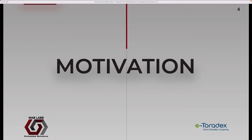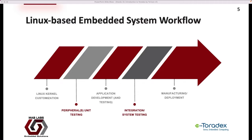Now, let's talk about the motivation behind using Torizon. Here we can see the typical workflow in creating a product that is a Linux-based embedded system. First, we most likely need to customize the Linux kernel. Most often, there is custom hardware in the form of a peripheral that is necessary for the end application. This customization step may require device tree changes, modification of the kernel configuration to enable a driver, or pulling in or developing our own driver. Then, once we've made the necessary kernel customization, we need to unit test both our customization and the peripheral itself.